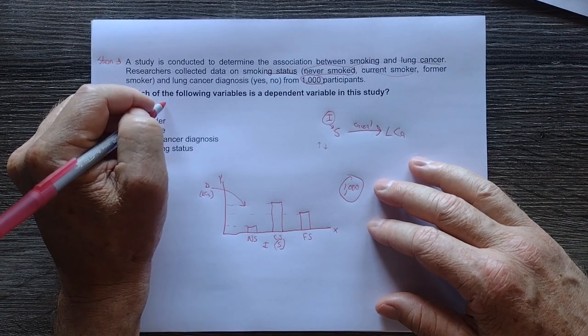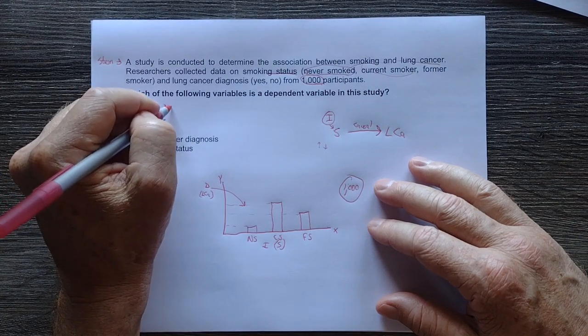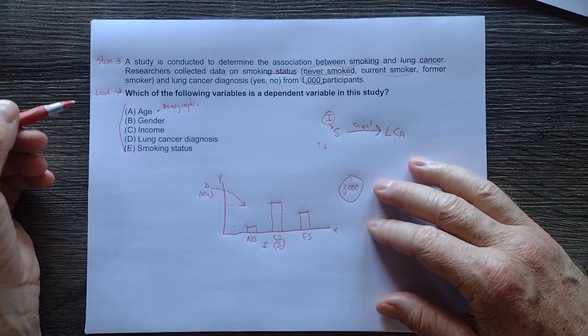In this situation, age. Age is a descriptive factor. It's a demographic variable and is not associated with this causal pathway. Therefore, it is not independent or dependent.